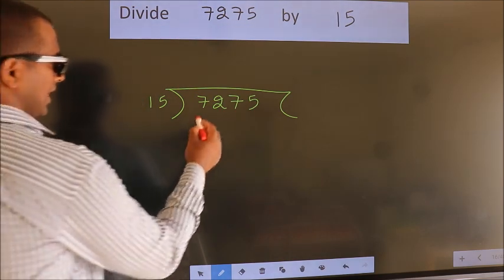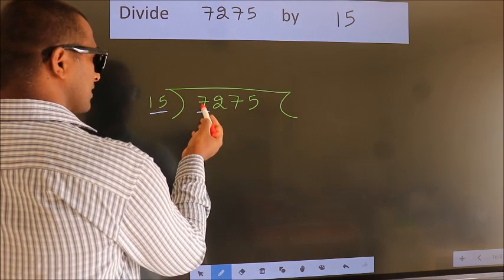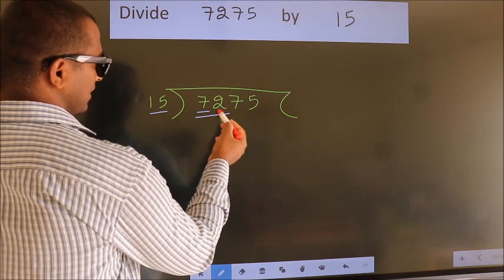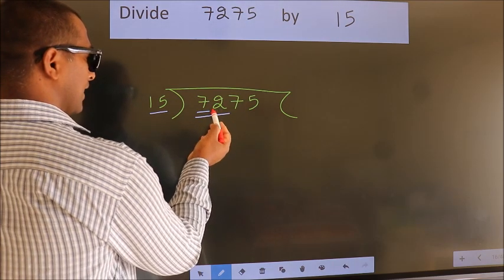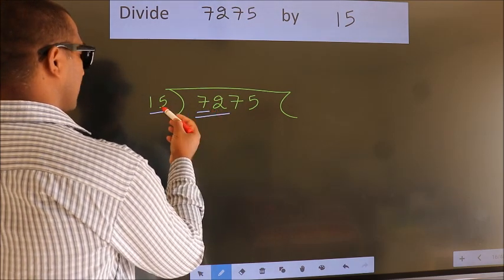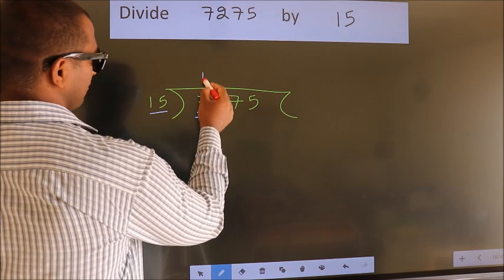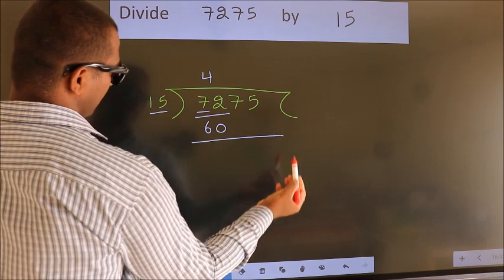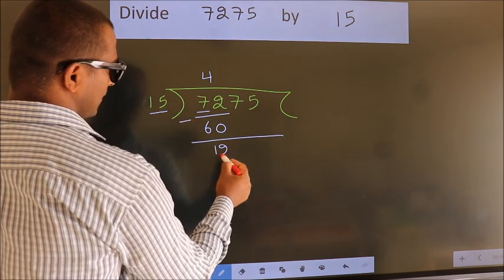Here we have 7. Here 15. 7 smaller than 15. So we should take two numbers, 72. A number close to 72 in the 15 table is 15 fours, 60. Now we should subtract. We get 12.